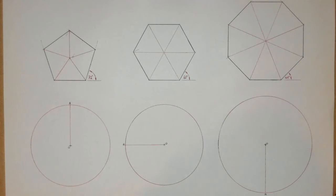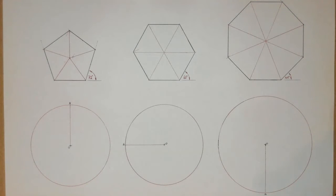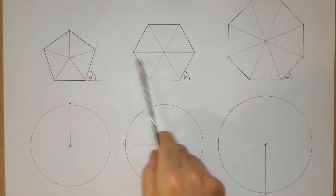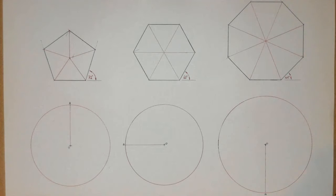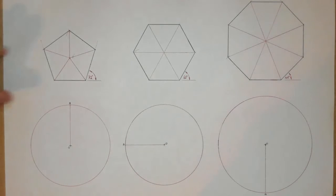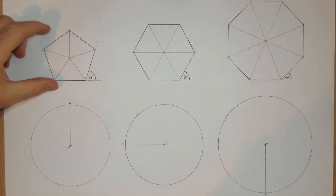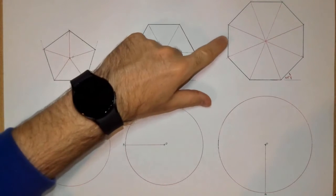Hi folks. The topic we have in front of us today is polygons, and what we're specifically going to be learning about is how to construct a polygon inside of a circle. As you can see, we have three circles, one for each type of polygon that we're learning about. We have three types: a pentagon, a hexagon, and an octagon.